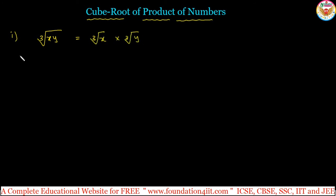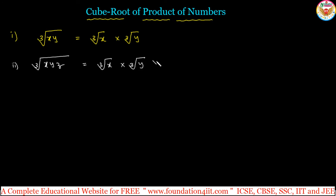Even if we take one more, for example, cube root of x into y into z, then we can separate this as cube root of x multiplied by cube root of y multiplied by cube root of z, and so on. We can make any number of splittings. Using this concept, we can find the cube root of any product of numbers.